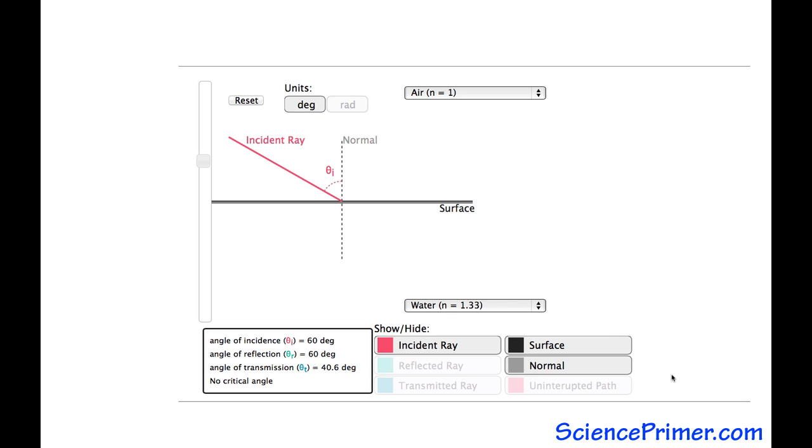The path a light-ray travels after encountering the surface can be predicted based on the incident angle and information about the surface. Light-rays that reflect follow the law of reflection. The law of reflection states that the angle of reflection is equal to the angle of incidence.